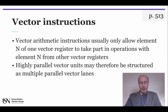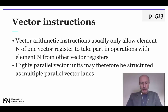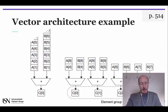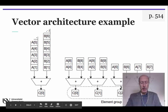Vector architectures operate on data sequentially using pipeline execution units. The parallel semantics of a vector instruction allows an implementation to execute operations using a deeply pipelined functional unit, an array of parallel functional units, or a combination of both. Since vector arithmetic instructions usually only allow element N of one vector register to take part in operations with the equivalent element from other vector registers, we can use multiple parallel vector lanes to build a highly parallel vector unit. This slide shows how multiple functional units can be used to improve the performance of a single vector add instruction — in this case, the vector processor on the right has four lanes and thus it can complete four additions per cycle.